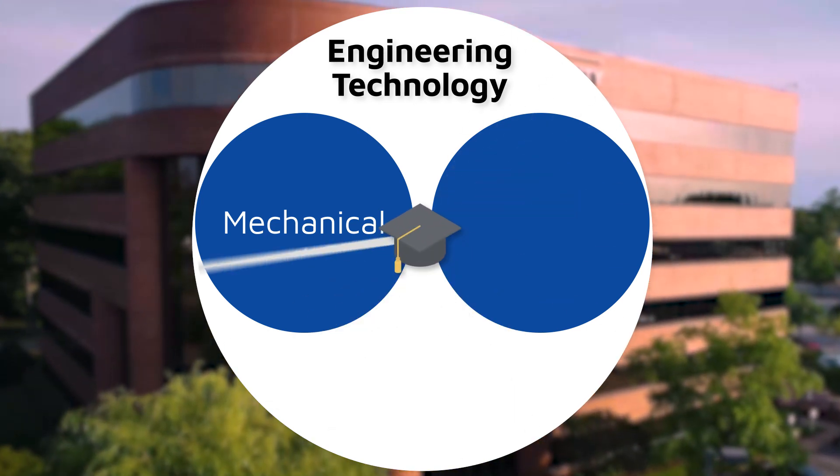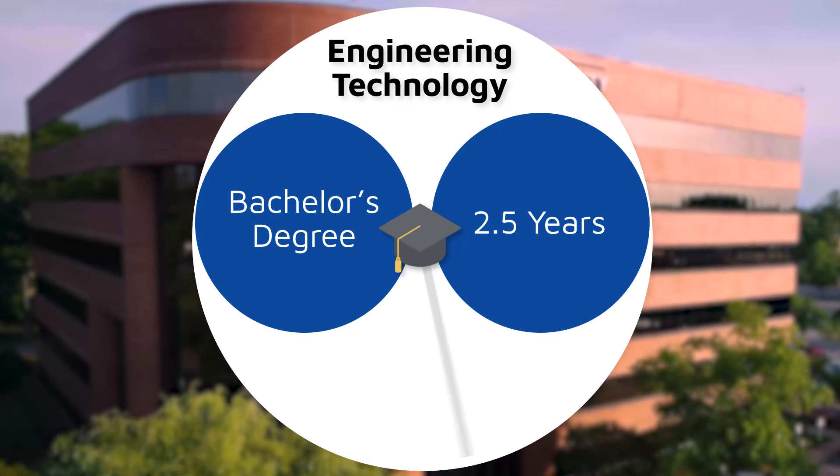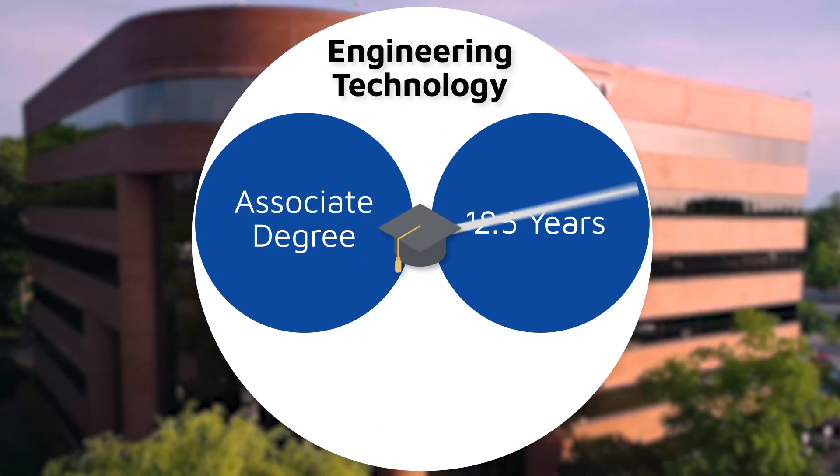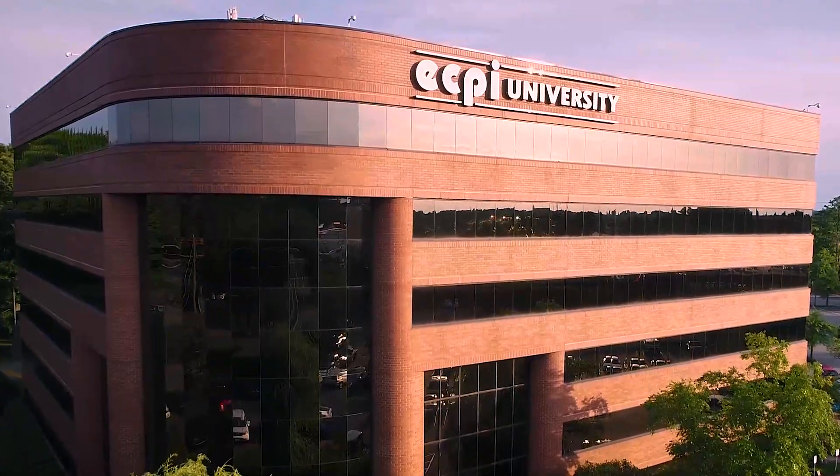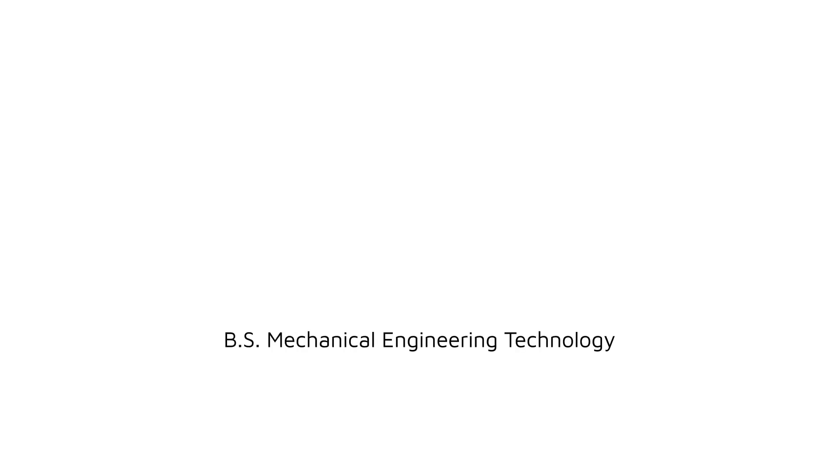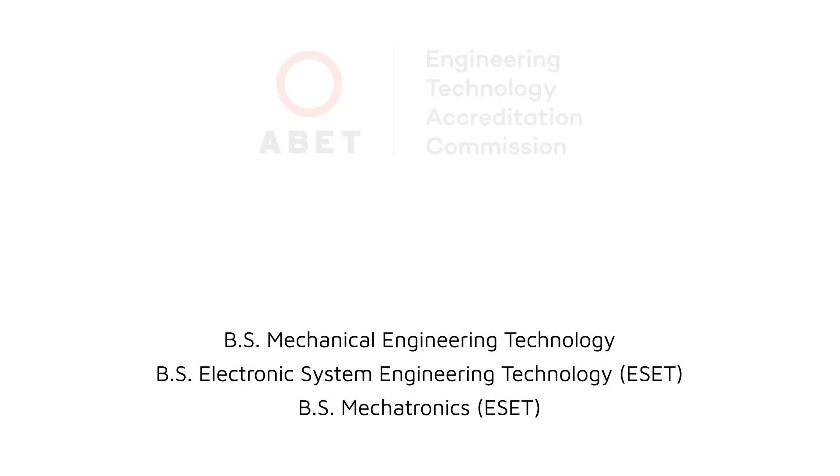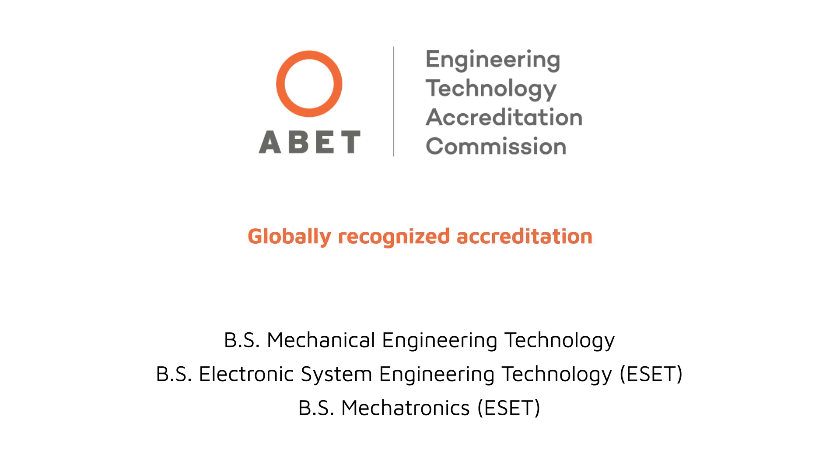And by earning a bachelor's degree in as little as 2.5 years or an associate degree in just 18 months, we can help you get there quickly. But what else sets our programs apart? First, we have three different bachelor's degrees offered 100% online that are accredited by the Engineering Technology Accreditation Commission of ABET, which is a globally recognized accreditation that gives our graduates the assurance that our program meets the quality standards of the professions they're preparing for.